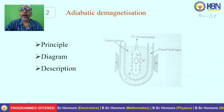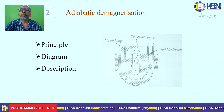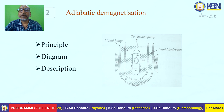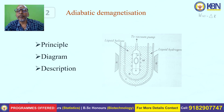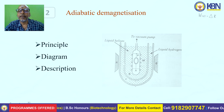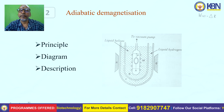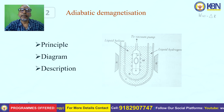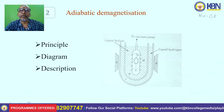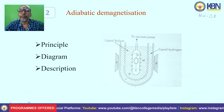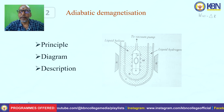With the help of the vacuum pump, the helium gas is removed from the cylindrical vessel A. The vessel is then thermally isolated — there is no conduction between the liquid helium and the paramagnetic substance. When the substance is suddenly demagnetized, the temperature decreases.